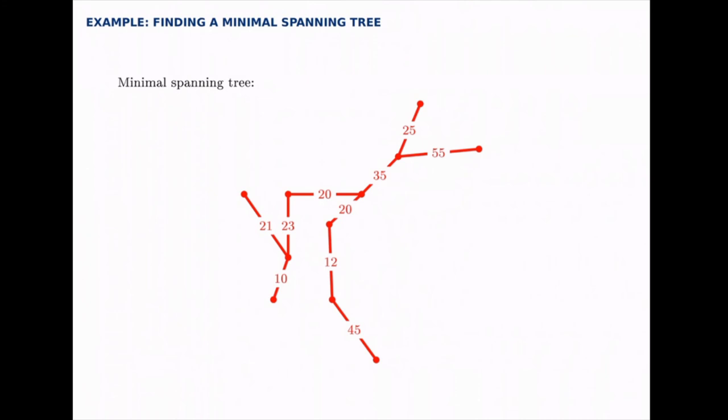It's possible to have more than one minimal spanning tree, several trees that tie for total distance. In this case there's only one but it's possible to have several that tie. But here's an example of one spanning tree for this graph and it turns out to be the minimal one.